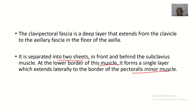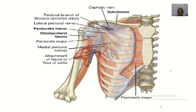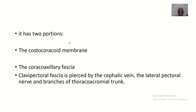This is still an anterior view of the clavipectoral fascia, and this here is the pectoralis minor muscle within the clavipectoral fascia. Basically, this fascia has two portions.